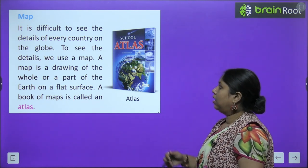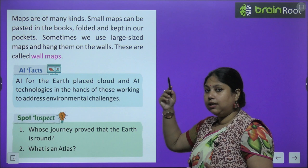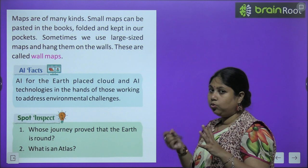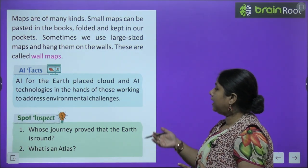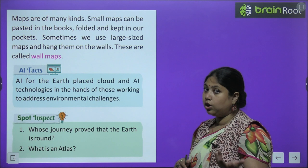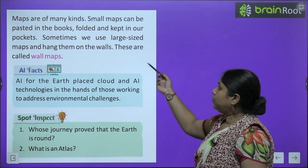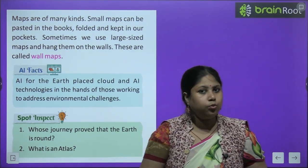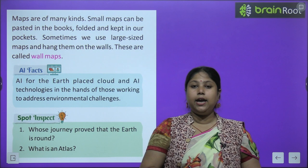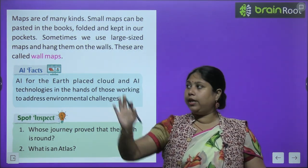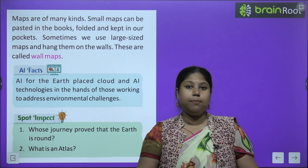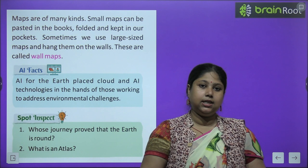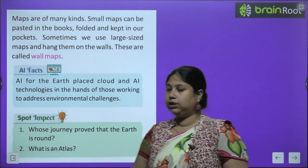Maps are of many kinds — tarah-tarah ke map hote hain. Small maps can be pasted in books — chhote maps chhote hote hain, unko aap aaram se apni copy ya books mein paste kar sakte hain, aur fold karke pocket mein bhi rakh sakte hain, jo ki globe ke saath nahi ho sakta tha. Sometimes we use large size maps and hang them on walls — these are called wall maps. Aapne apne school mein dekha hoga bachcho — kai baar kya hota hai, hum bade-bade maps laaker unhein walls pe laga dete hain. Aisi maps jo hum bade size ki banwaate hain aur walls pe stick karte hain, unhein hum wall maps bolte hain.